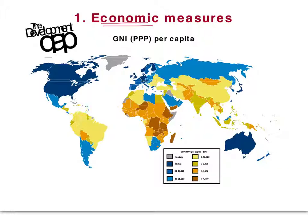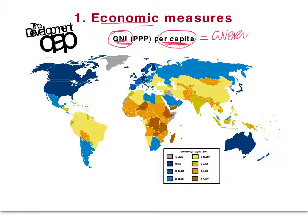The first economic measure is GNI per capita. GNI stands for Gross National Income — it's the total value of all goods and services produced in a country in a year, including income from foreign investment. It's a measure of how much money is earned in a country. Per capita means per person, so you take the total amount of money earned, divide it by the total number of people, and that gives you a rough indication of the average income.